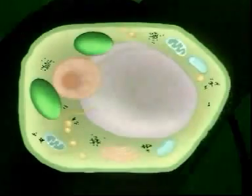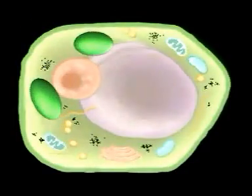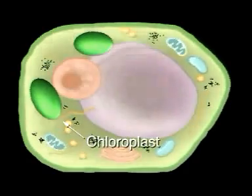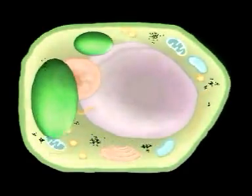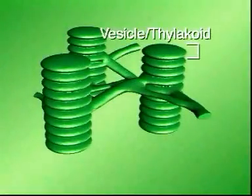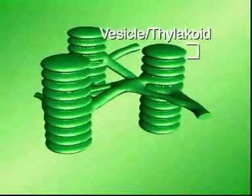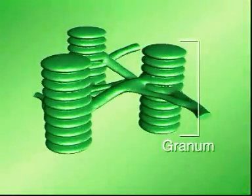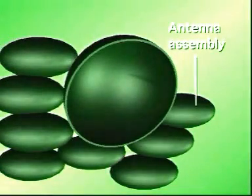Most eukaryotic photosynthetic cells contain organelles called chloroplasts. The inner membrane is arranged as stacks of vesicles. Each vesicle is a thylakoid, and the stack is a granum. Photosynthetic pigments are located on the thylakoid membrane in clusters called antenna assemblies.